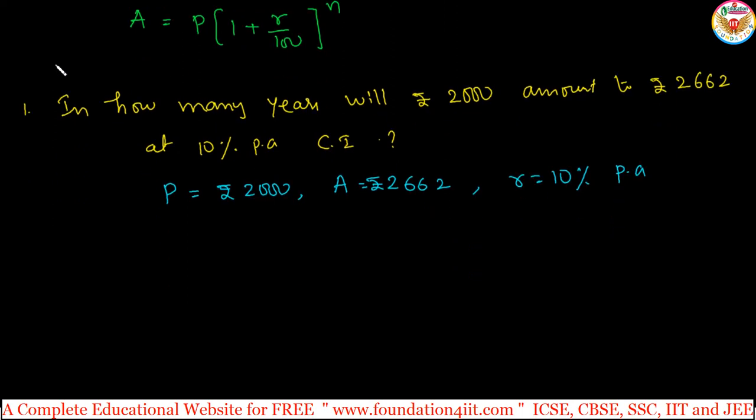Using the same formula: A equals 2662 equals P into (1 plus r by 100) to the power n. P is 2000, r value is 10 by 100, all to the power n. For what value of n will this be equal? Taking 2000 to the other side by dividing: 2662 by 2000 equals (1 plus 10 by 100) to the power n.